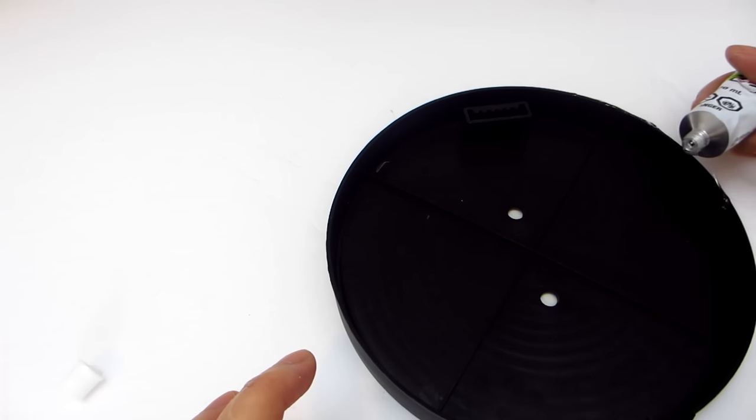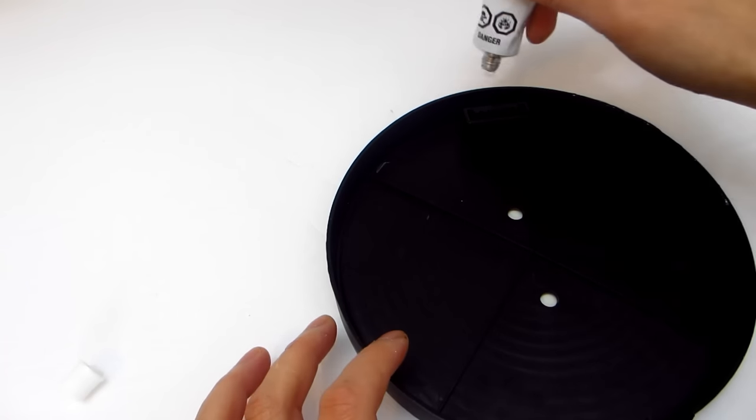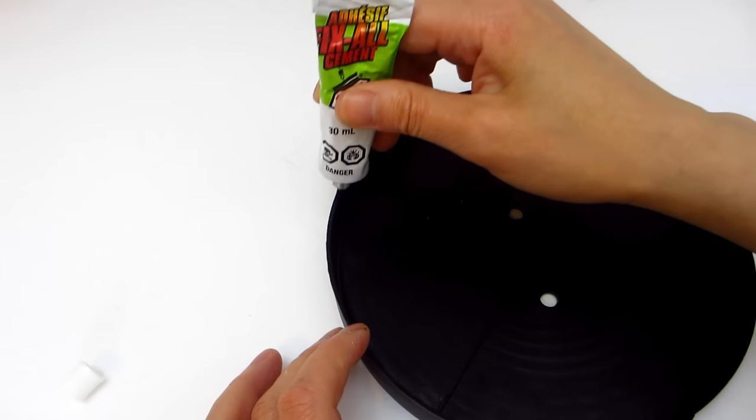Once we have the hole created, a half circle on each frame, then adhere the frames together with some fix-all and hot glue.